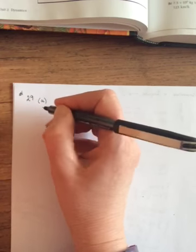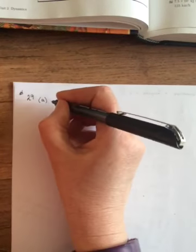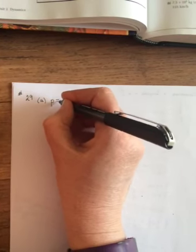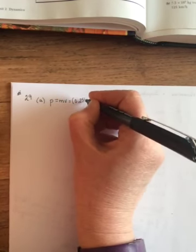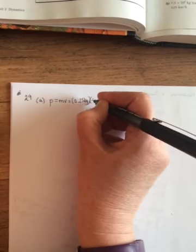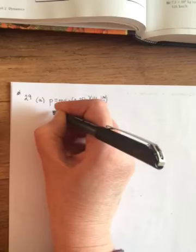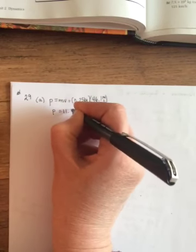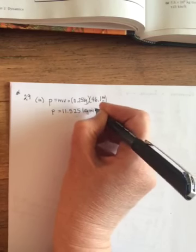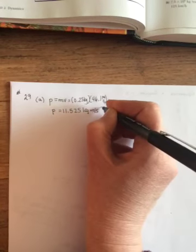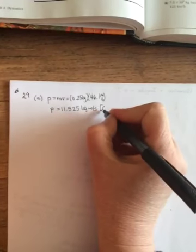Part A is a 0.25 kilogram baseball traveling at 46.1 meters per second east. So it's just P equals MV. So 0.25 kilograms times 46.1 meters per second. And when you do this, you get a momentum of 11.525 kilogram meters per second. Momentum is a vector, always will have the same direction as the velocity. It was east.